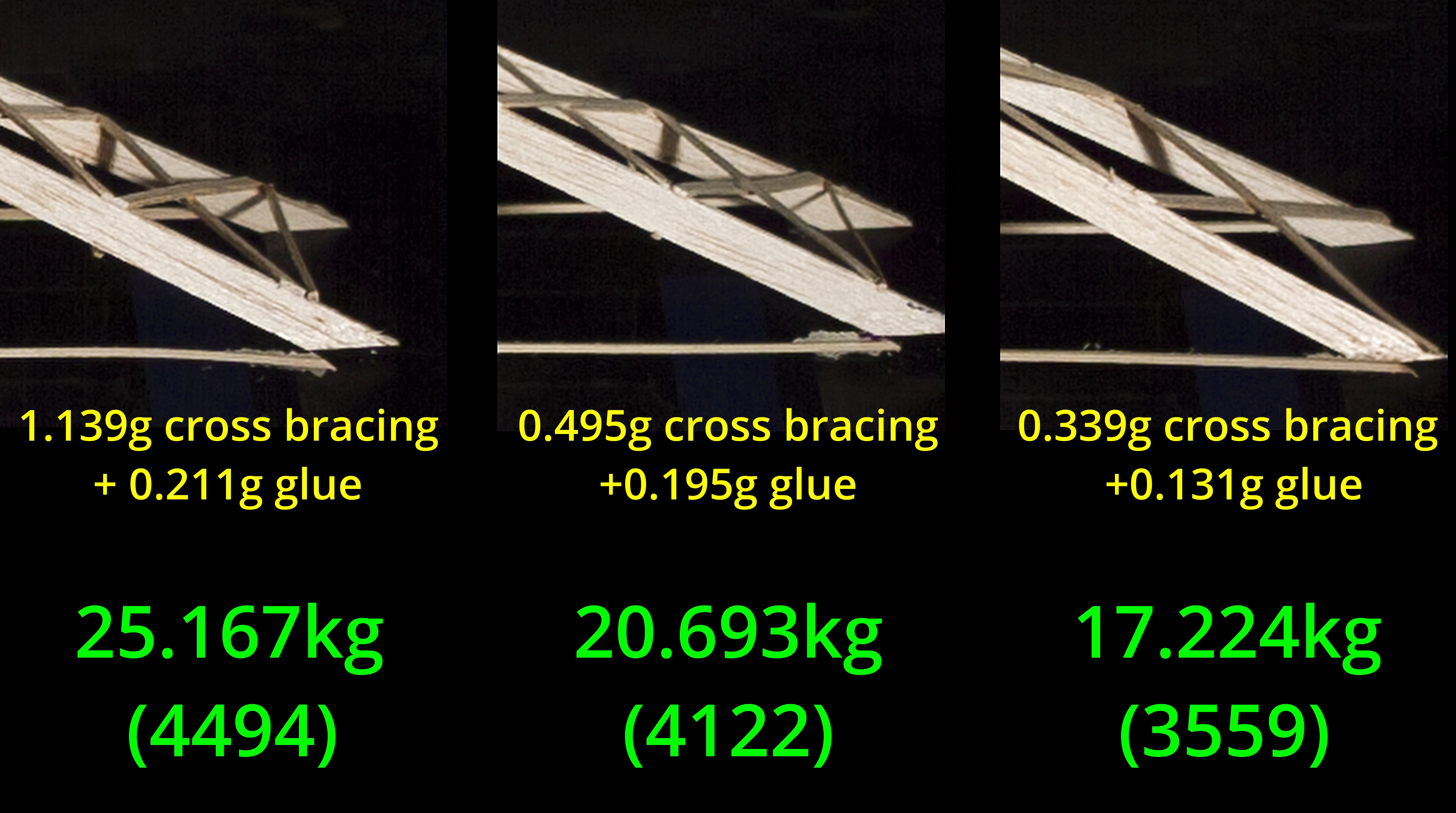This information really changes the game in trying to determine what the weak point of a given design is. Seeing a failure like this doesn't automatically mean that the root cause is what is obvious and that the best way to solve the problem might be to change another aspect of the design. This also shows how interdependent the functional groups of this bridge really are.